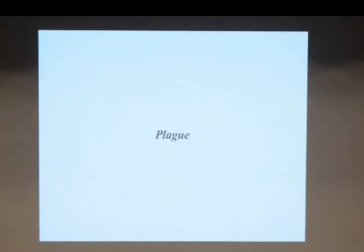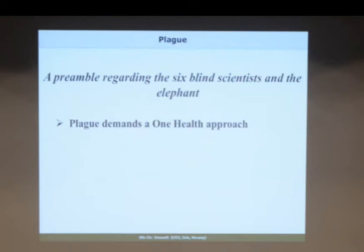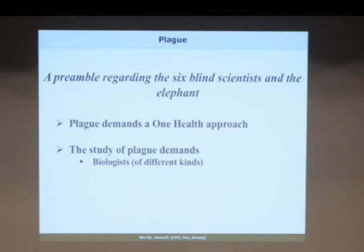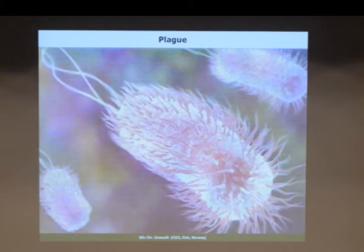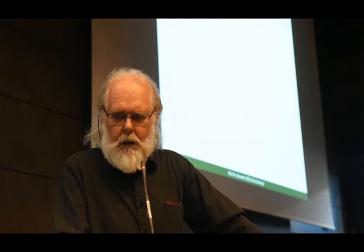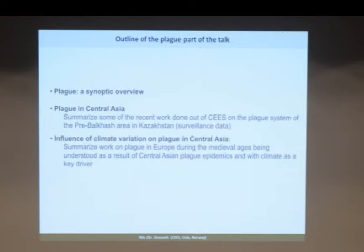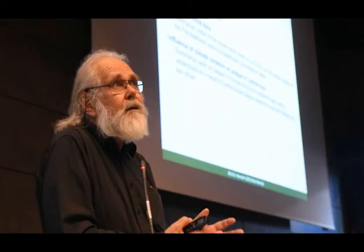I will structure my remaining part of the talk. Plague demands a One Health approach. The study of plague requires that biologists and social scientists and historians are working together, or joining forces. I will be giving a very brief synopsis of plague. I will tell my own scientific story working on plague, starting in Central Asia, Kazakhstan, asking questions about how climate variation is influencing the dynamics of plague.